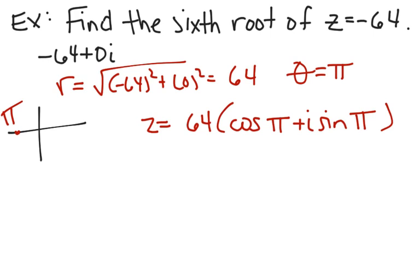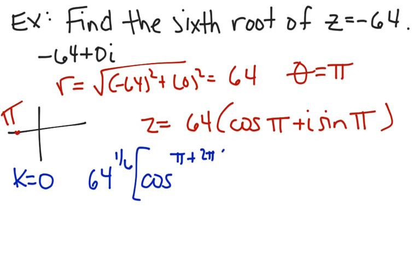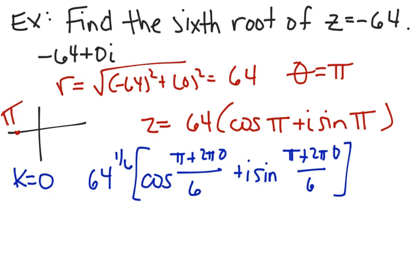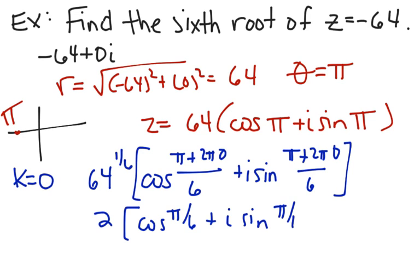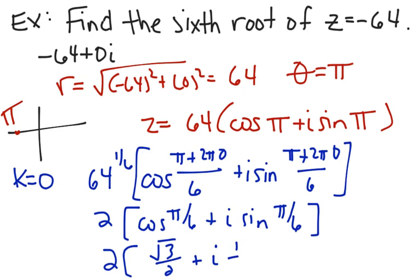Now let's find our roots, starting with k = 0. We compute 64^(1/6) = 2, then cosine of (π + 2π·0)/6 = cos(π/6) and i·sin(π/6). Cos(π/6) = √3/2 and sin(π/6) = 1/2. Multiplying both by 2 gives the first root: √3 + i.